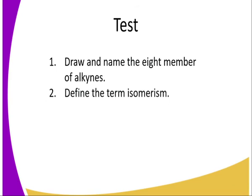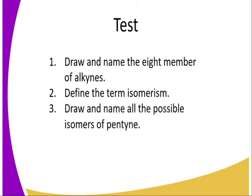Question number 2: define the term isomerism, and illustrate the types of isomers exhibited by alkynes. Question number 3: draw and name all the possible isomers of pentyne — that is, a hydrocarbon with a triple bond in which we have 5 carbon atoms, where each carbon atom must have all 4 bonds occupied.